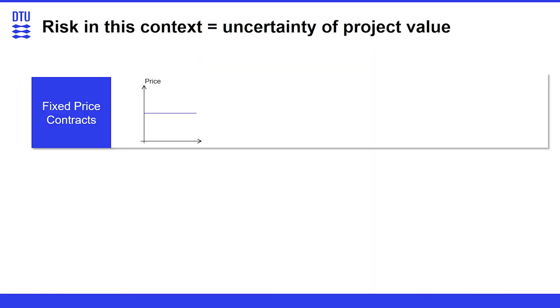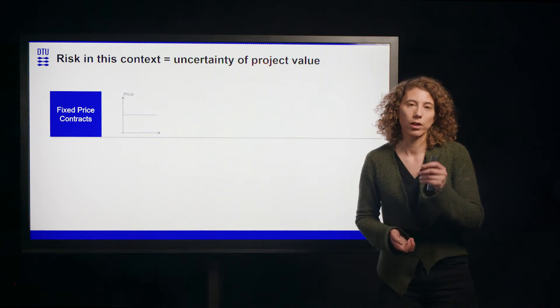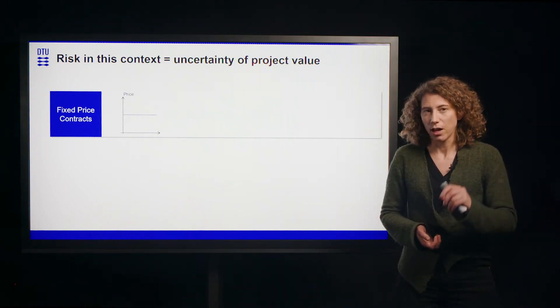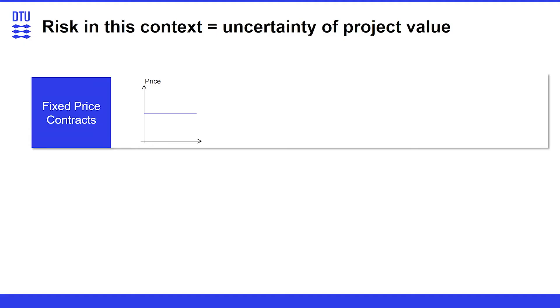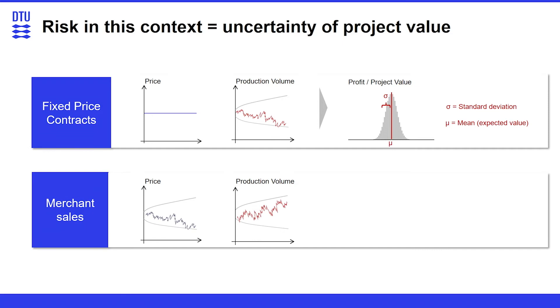But what does that mean to have risk in investment projects? Here we always mean the uncertainty of the project value. Let me give you two examples. The first project has a fixed price contract. You can see that here on the axis, the price is the same over the whole project period. However, what is uncertain still is how much the wind farm is going to produce. We don't know. It could be taking different pathways. And because of that, the project value is uncertain. What we can do now is we can calculate the project's profitability distribution. So this is the probability distribution which we expect the project to be yielding. We have a mean which is the expected value of the project and then we can determine the standard deviation which is a measure for the variation.